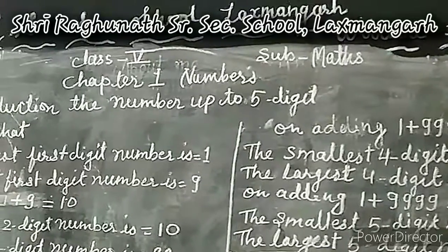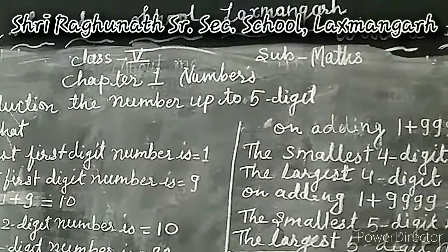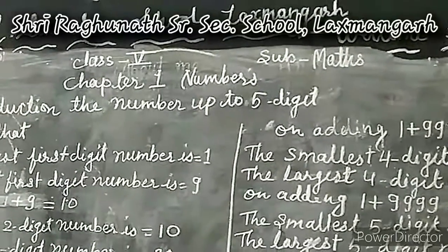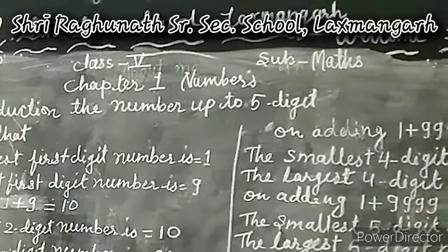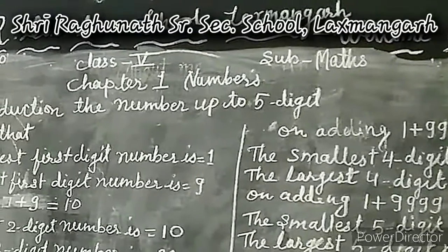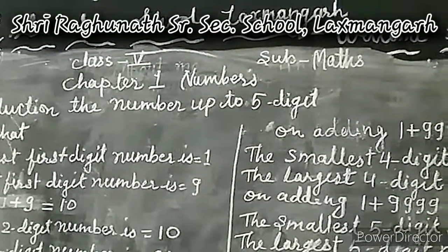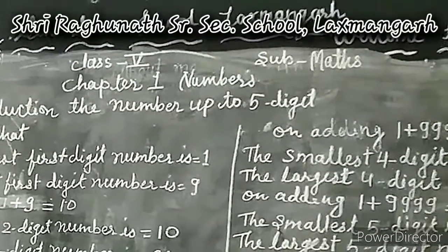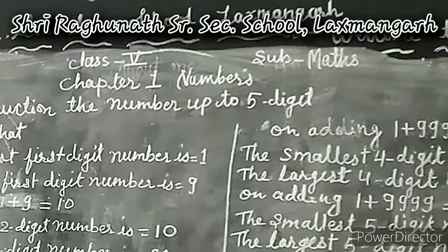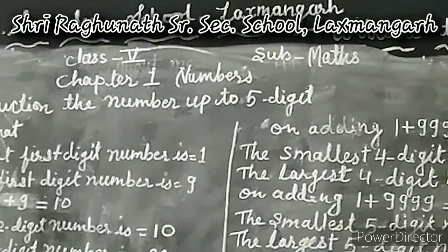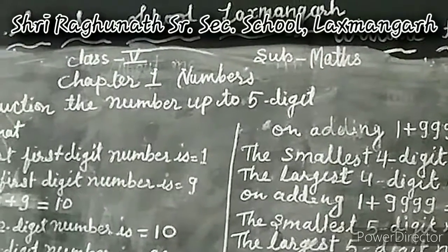Ninety-nine is the largest two-digit number, so the smallest number of three digits is 100. And the smallest number of four digits follows similarly — the largest three-digit number is 999.